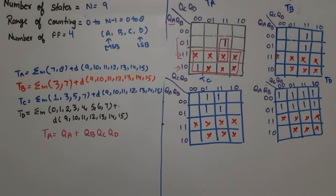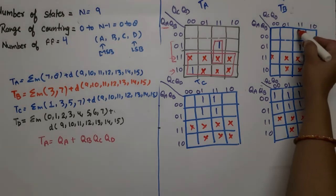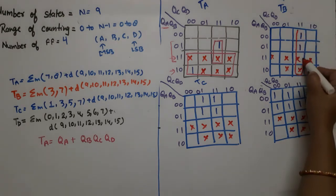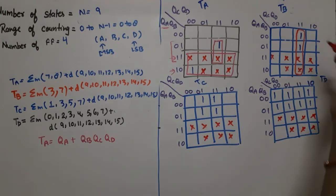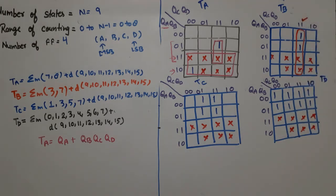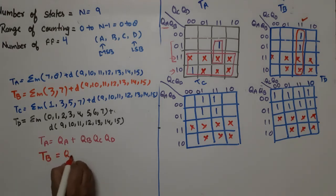For TB simplification: only one quad is formed. In this quad, both QC and QD values are 1, meaning TB = QC·QD.